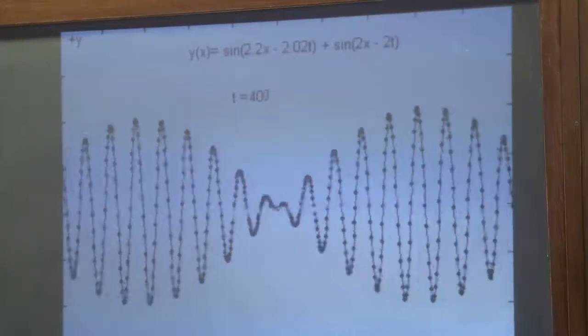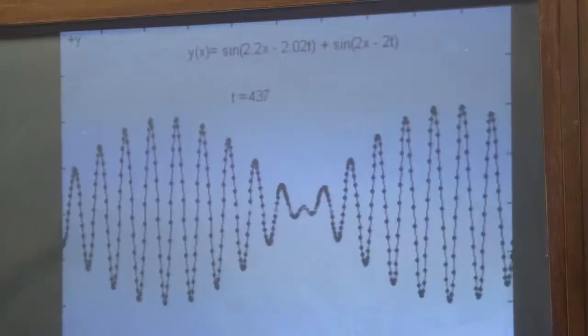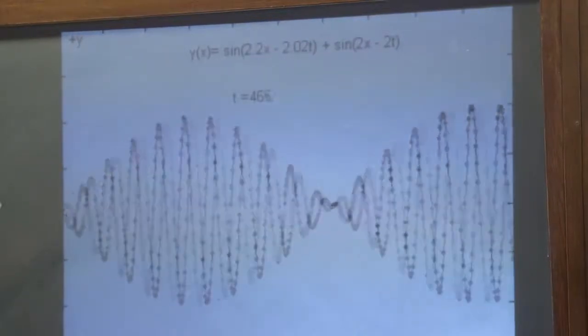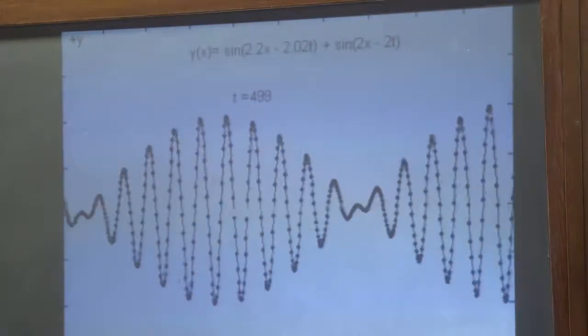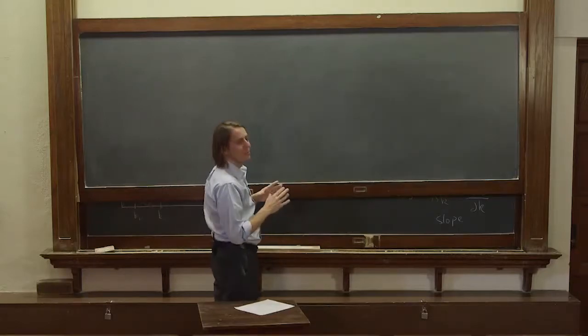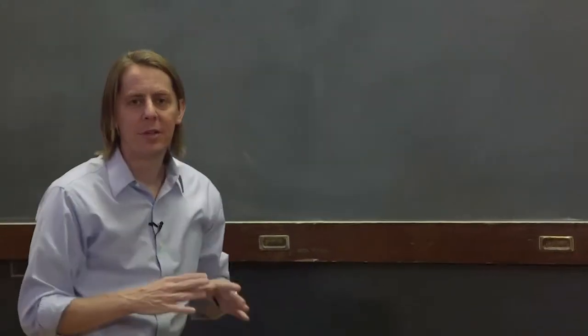And that's because the difference up there, 2 and 2.2 and 2.02 and 2 are pretty small. So that's what it looks like when the group velocity doesn't equal the phase velocity.